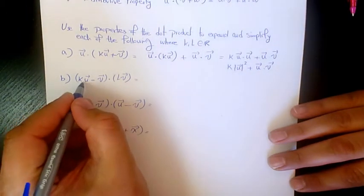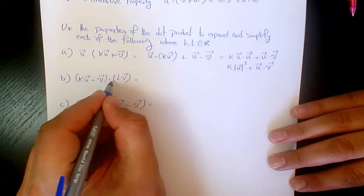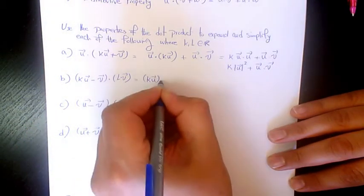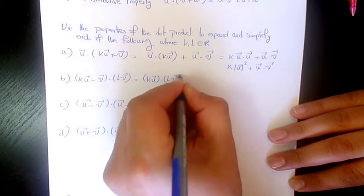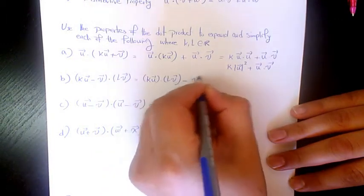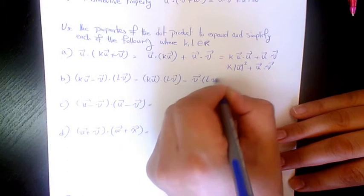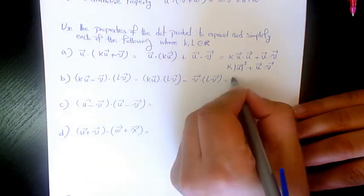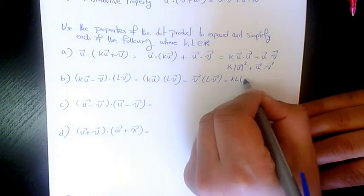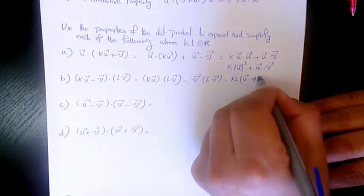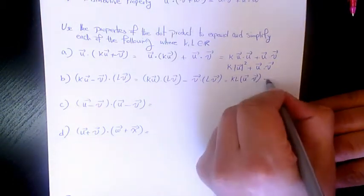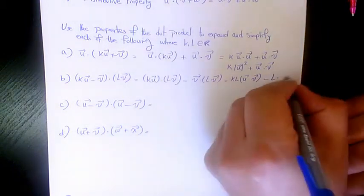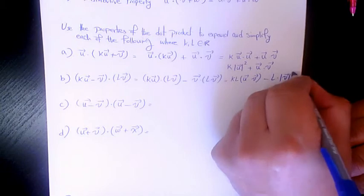Next we have k(u minus v) dot lv. That's going to be ku dot lv minus v dot lv. Since k and l are scalars, we take them out: kl times the dot product of u and v, minus l times the magnitude of v squared.